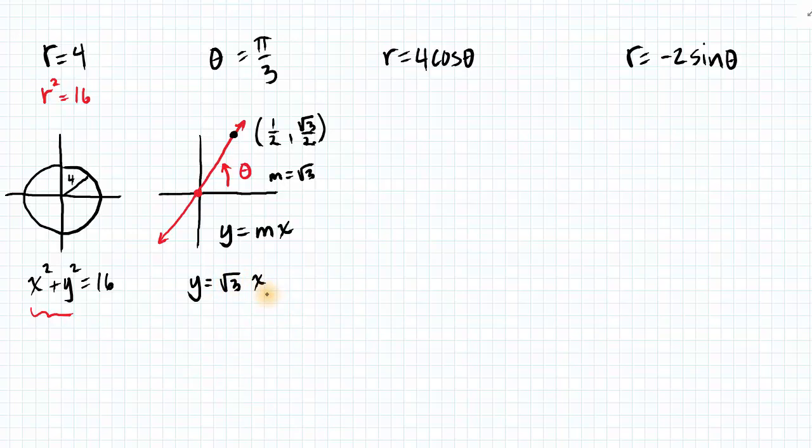Now let's look at these last two. And the way that we're going to convert these from polar over to Cartesian or rectangular is to not square, but multiply both sides by r.